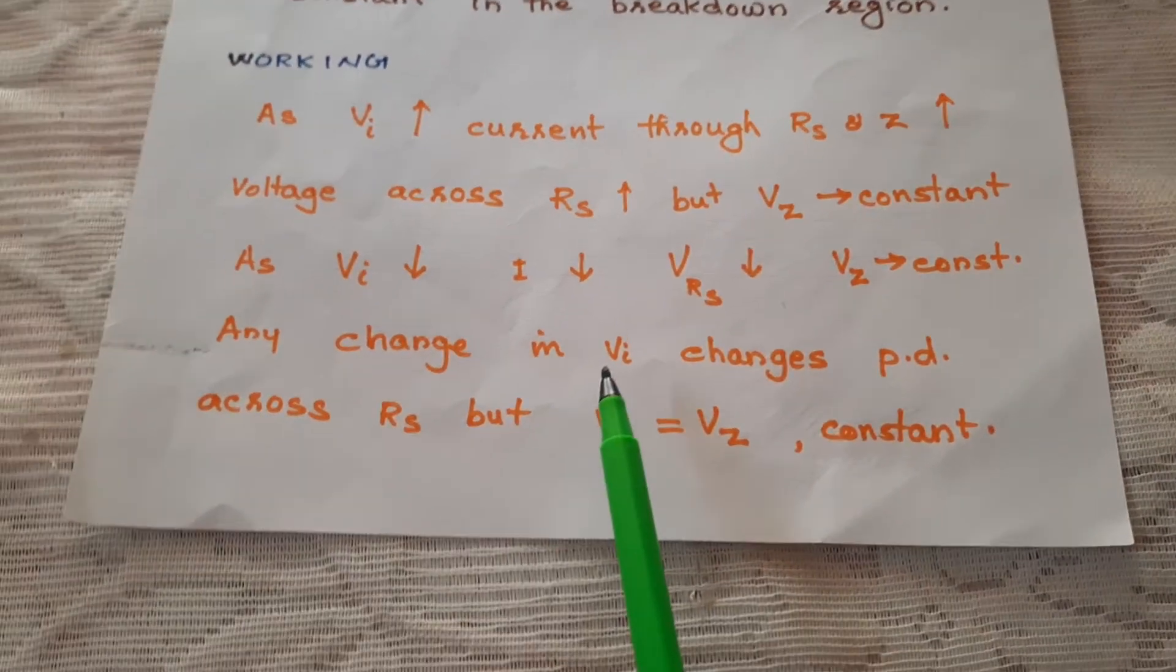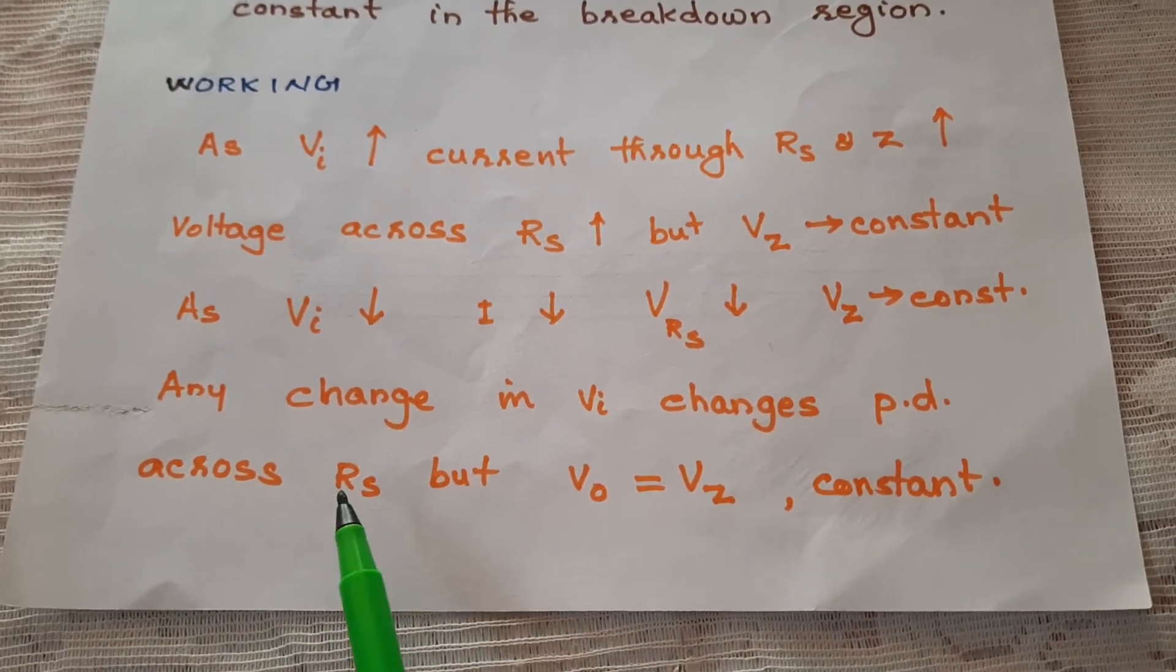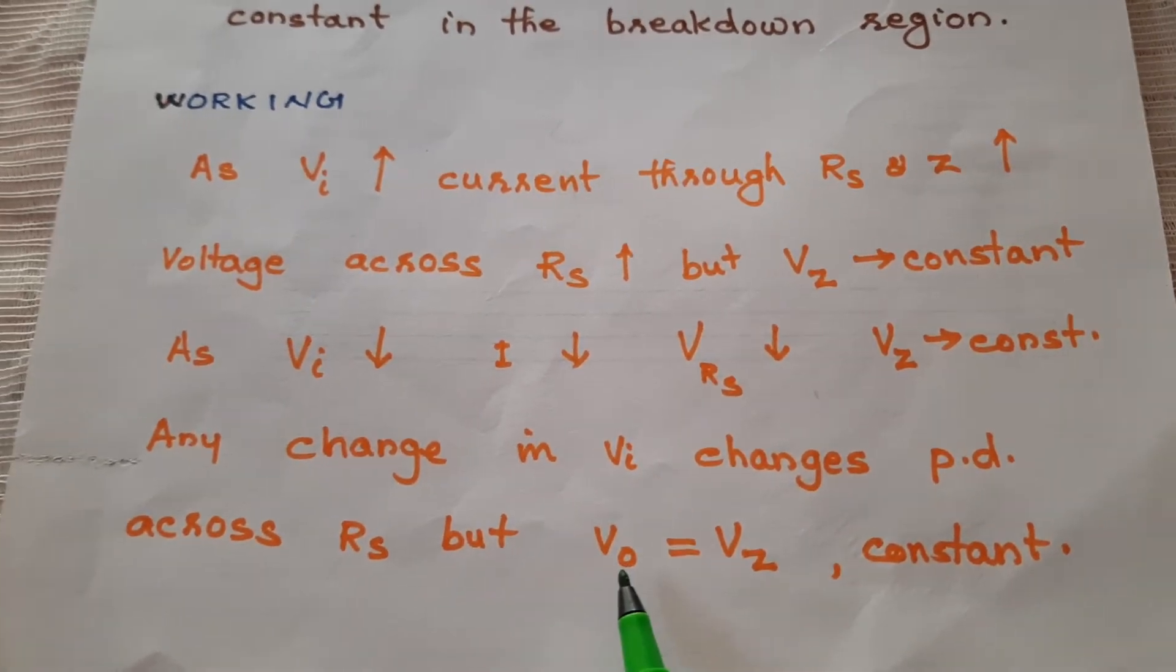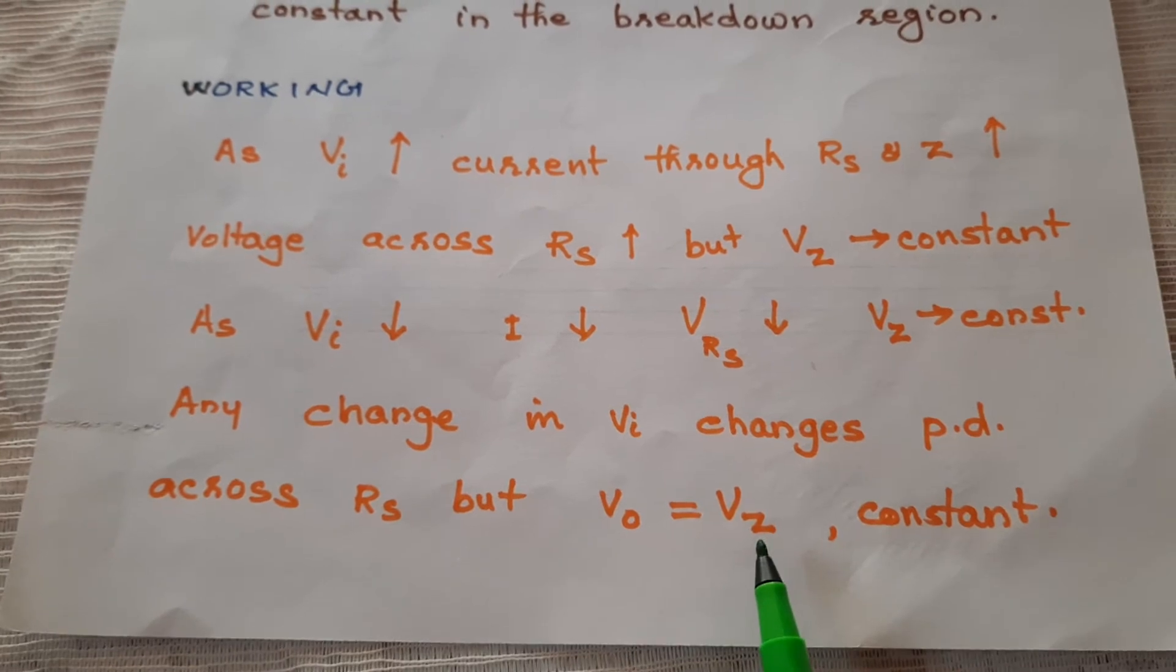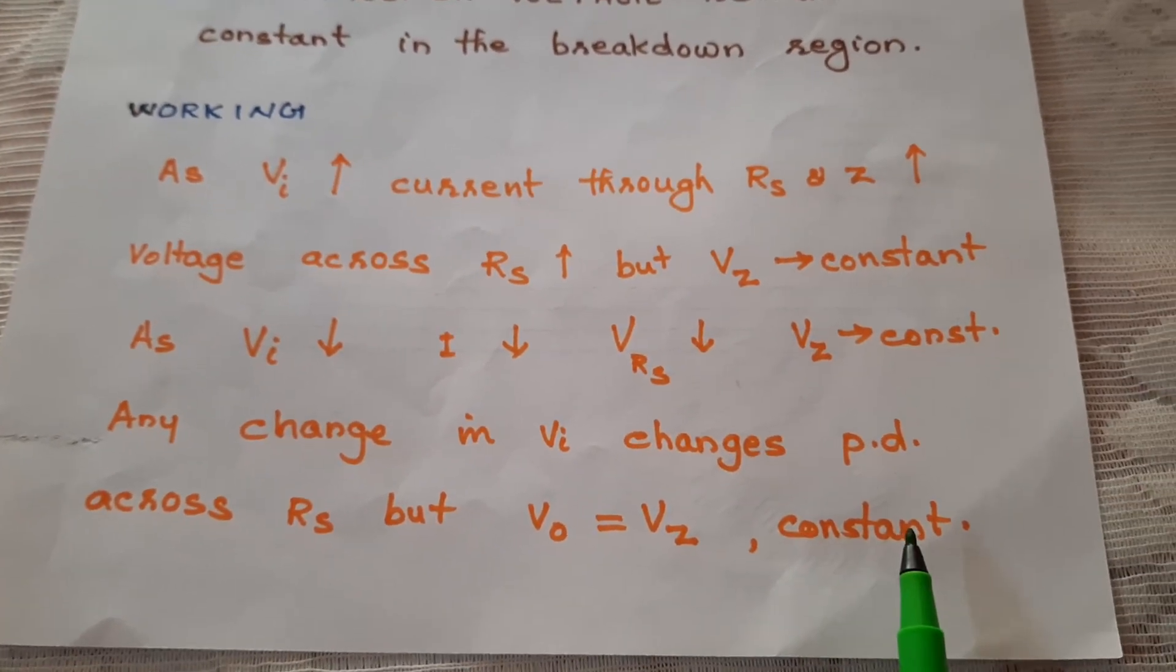Any change in input voltage changes the potential difference across RS. But output voltage is always equal to the Zener voltage. That is, it remains constant.